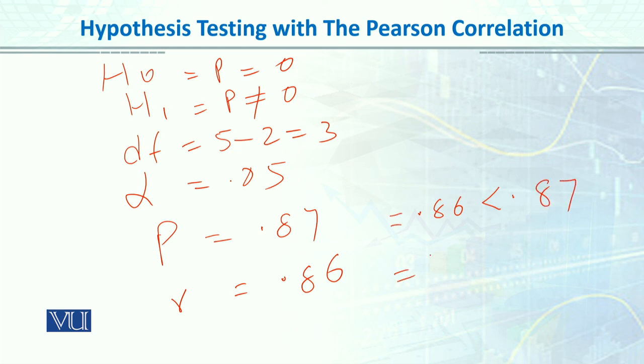This means we fail to reject the null hypothesis (which was ρ = 0). Our value is smaller than the critical value. Our sample size has a big effect. Though our correlation is high, because our sample size is very small, if we increase the sample size slightly, this correlation will become significant. But given this data, comparing the two values, we fail to reject the null hypothesis.